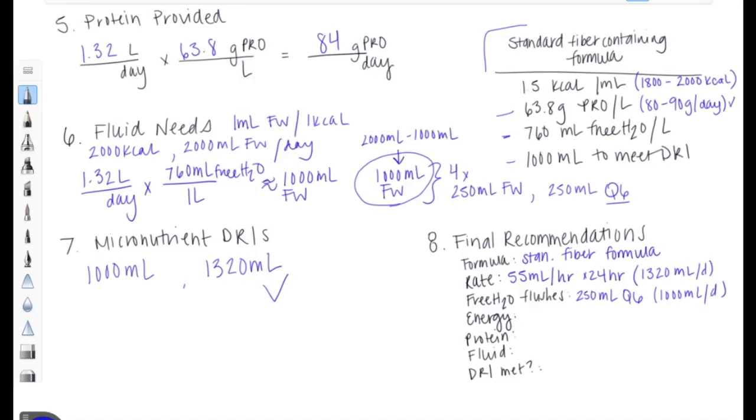In terms of energy, we're giving our patient 1,980 kcals. For protein, we came to a total of 84 grams. And the overall fluid we're providing is the 1,000 from the formula, plus the 1,000 milliliters from our free water flushes. This is going to give us a total of two liters every day. Now, if we look at step number seven, we can check off this box saying that we did meet our DRIs for the day. Since we've been able to look at all the different pieces here as to what our patient needs and what they'll be provided, we can say that yes, this patient can reach all of their needs through enteral formula.